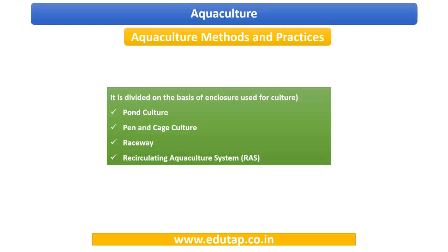There are various aquaculture methods and practices, and their division is based upon the type of enclosure used for culture. We have seen that aquaculture means rearing aquatic species, and for that we need an environment — freshwater, marine, or brackish. The next thing needed is an enclosure because we are doing artificial cultivation with some form of intervention to increase production for commercial or other purposes. Based on the type of enclosure used, it can be classified as pond culture, pen and cage culture, raceway, and recirculating aquaculture system. Just know that these systems exist.